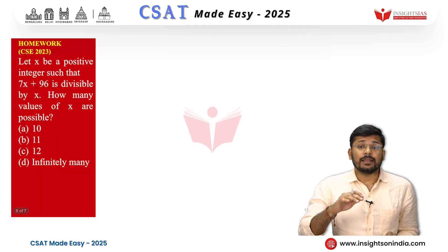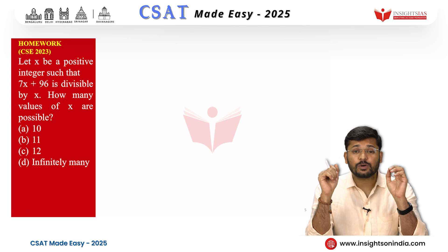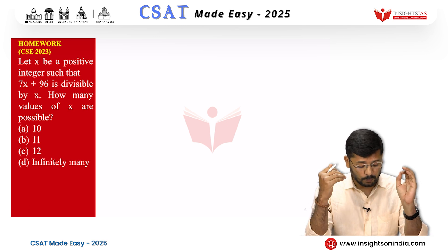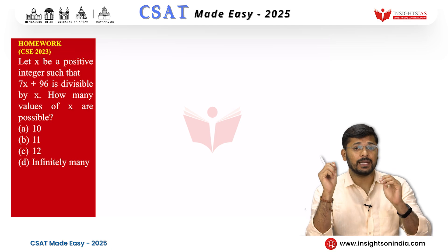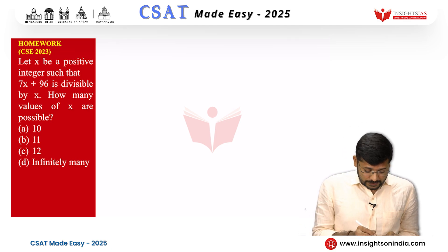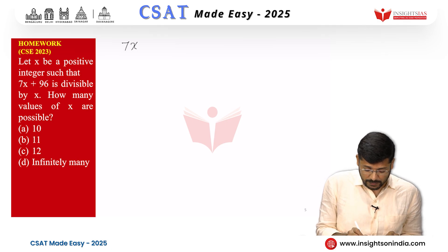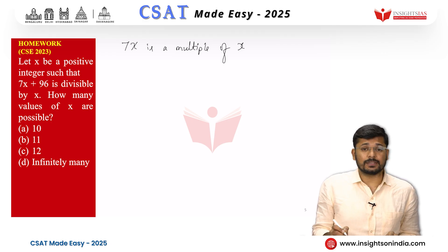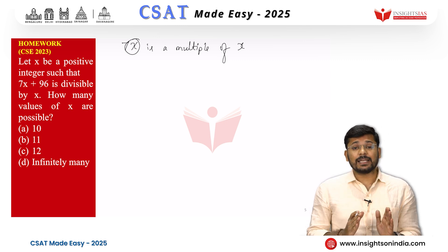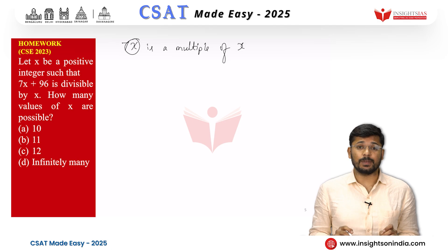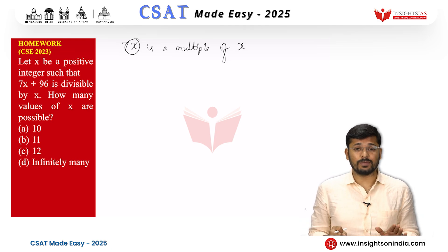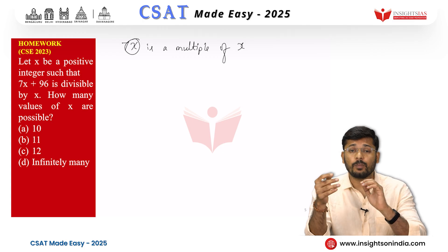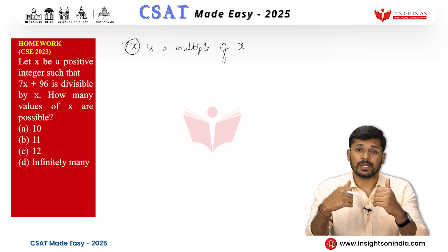Let us go to the next question now. This is your homework question. This question was asked in the 2023 paper. Let x be a positive integer such that 7x plus 96 is divisible by x. How many values of x are possible? It is very similar to the previous problem. First we know that 7x is definitely a multiple of x. 7x is a multiple of x because it is 7 into x. Then if 7x plus 96 has to be a multiple of x, then 96 has to be a multiple of x. So list out the factors of 96. How many factors are there for 96? That many values can x have. That will be your answer. Do answer this question and leave the answers in the comment section. We shall discuss the answer and solution to this problem in the next class.